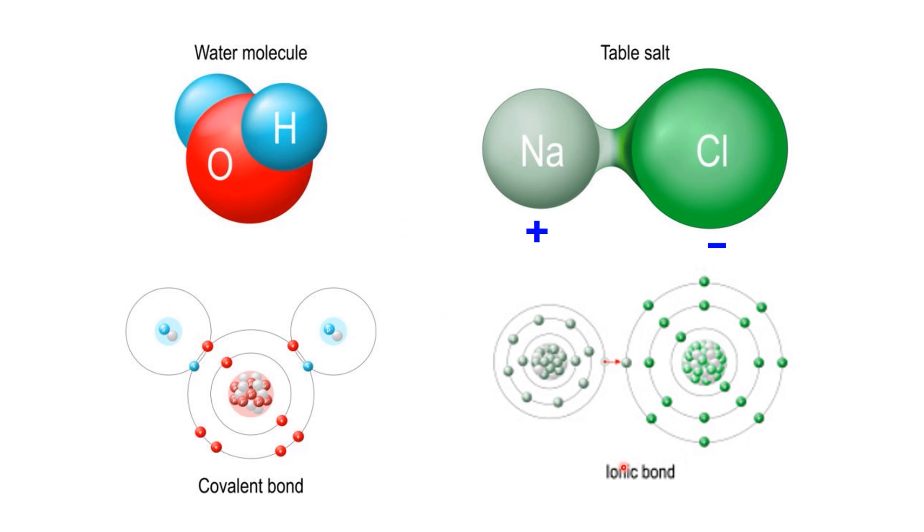In an ionic bond, one atom transfers one or more electrons to another. This typically happens between a metal and a non-metal. As a result, one atom becomes positively charged, the other becomes negatively charged, and the two are held together by a strong electrostatic attraction.